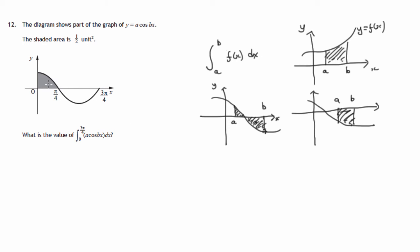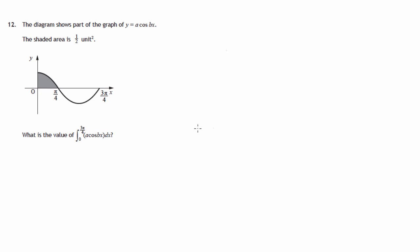So in this example here, we're told that this area is a half. Now let's get rid of these little explanation diagrams and have a look at the symmetry of this graph.